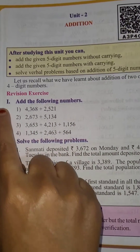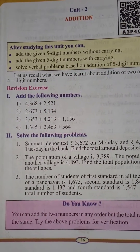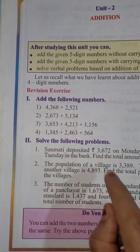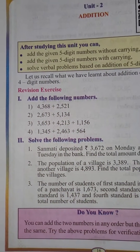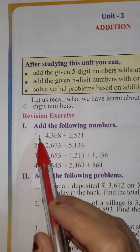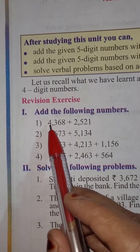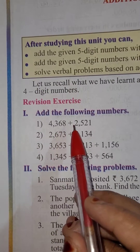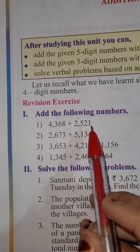So let's start with the revision exercise. We are going to start from the first main: add the following numbers. The first one is 4368 plus 2521.